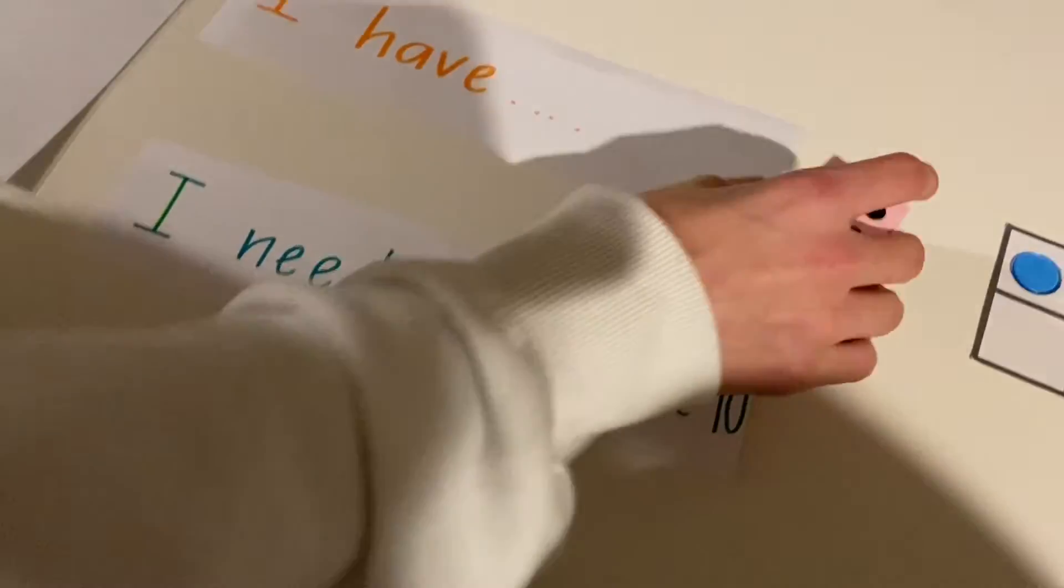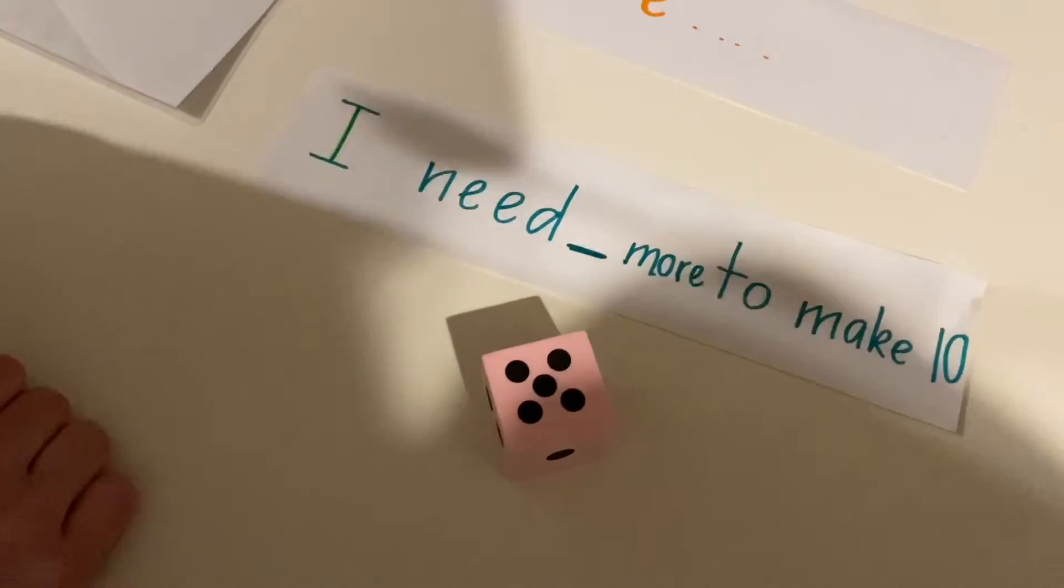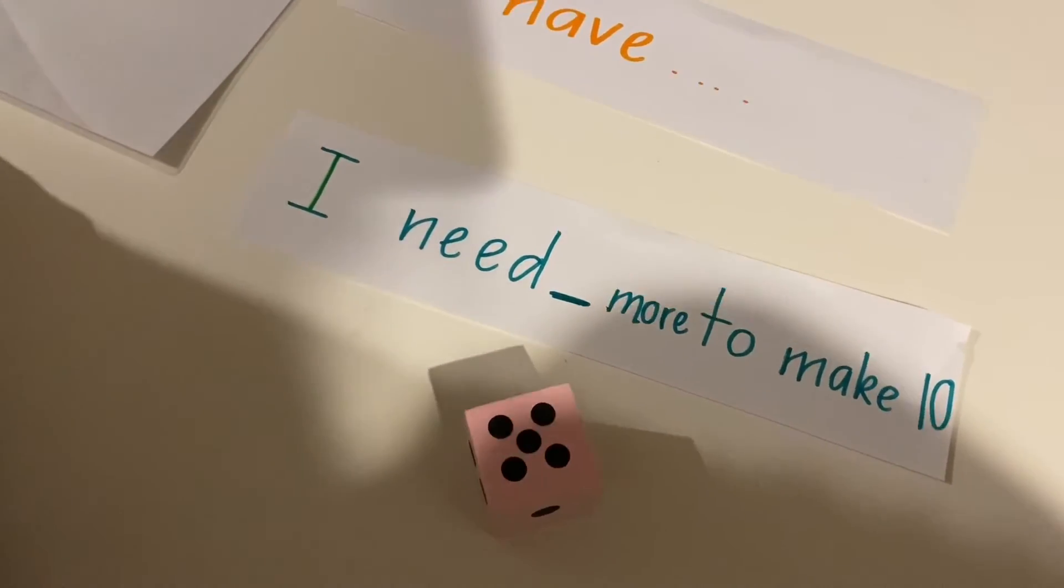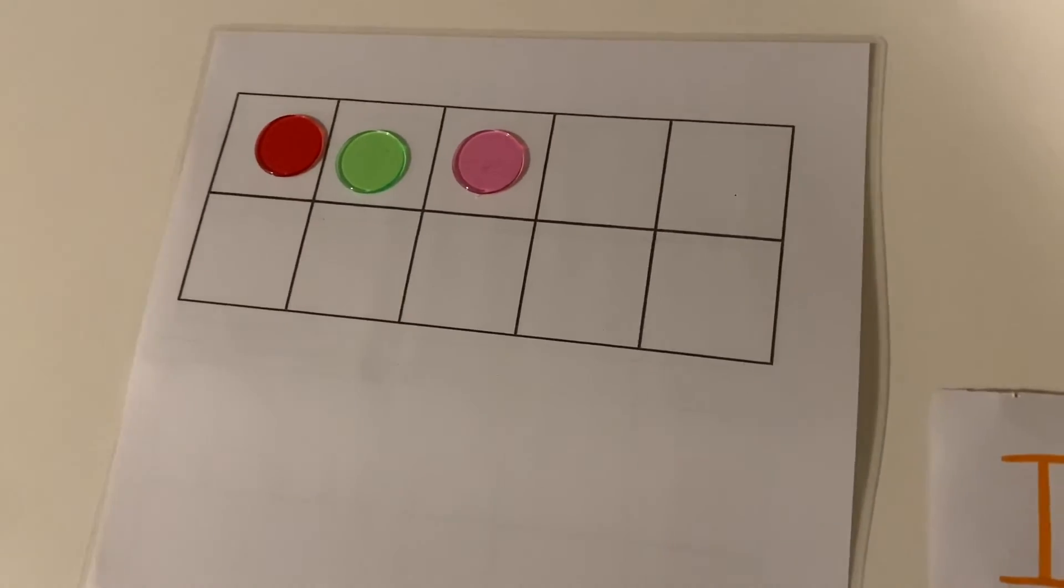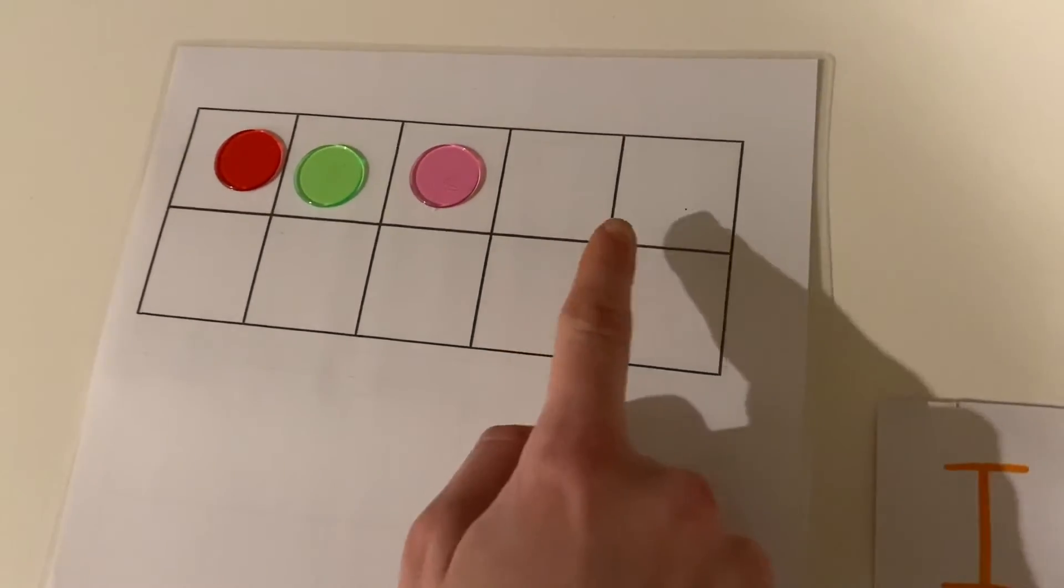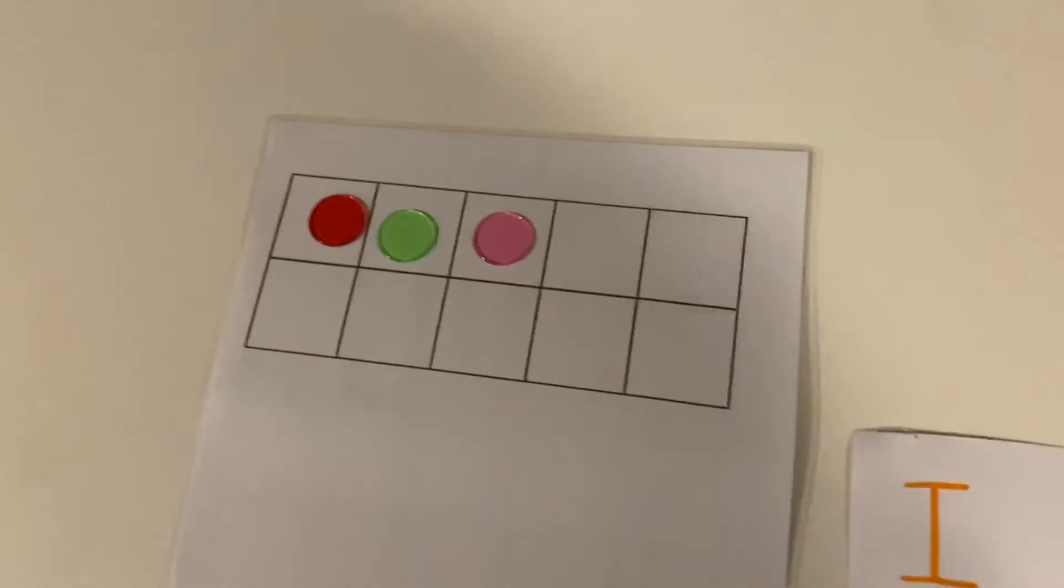Player one. Your turn. What did you get? Five. Okay how are you going to make five on the tens frame? I need two on the top row. Yep and how many on the bottom row? Three. Okay let's put them on.